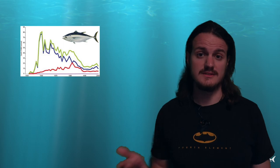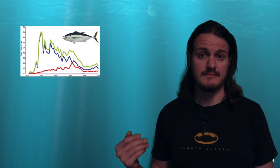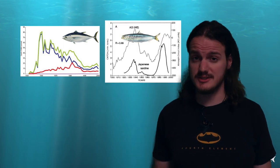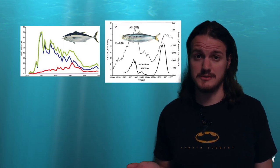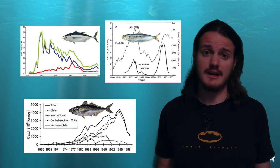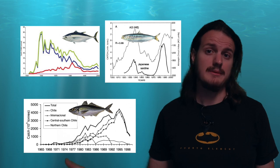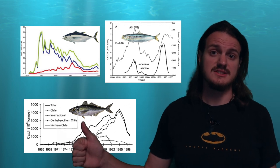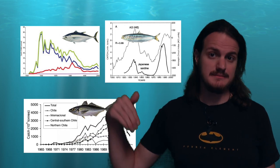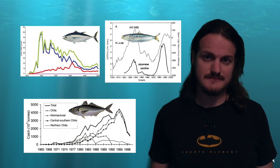You can see similar trends in other fisheries around the world, like the southern bluefin tuna, the Japanese pilchard, or the Chilean jack mackerel — rapid increases in catches followed by steep declines. But conservation and management efforts can have the opposite effect.